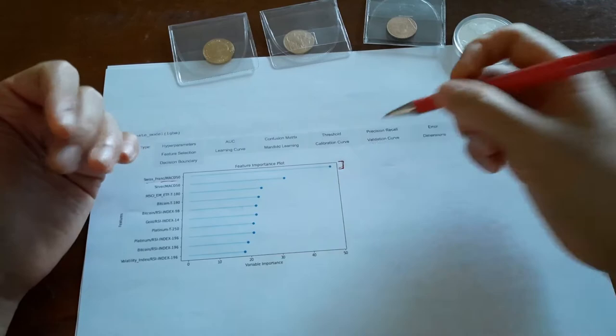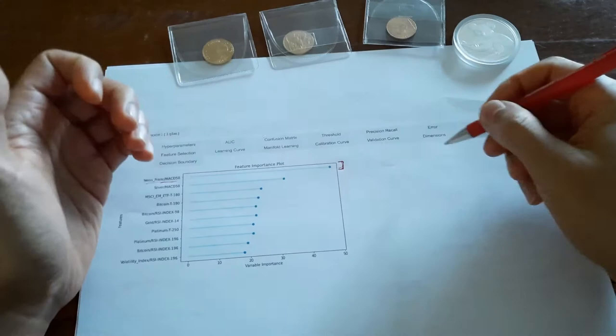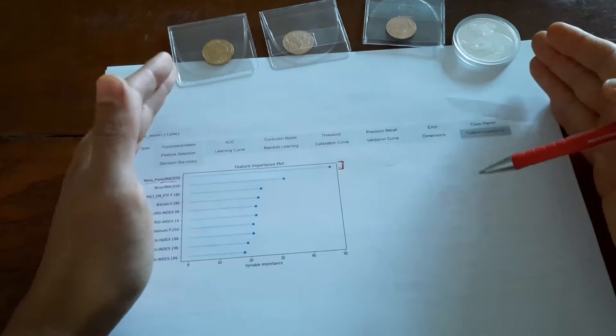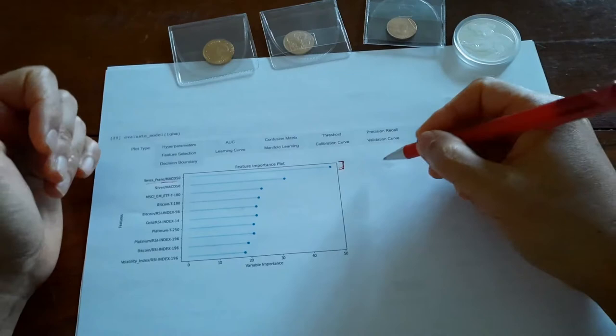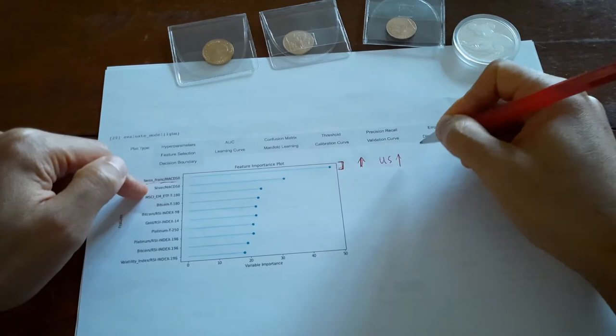So this is Swiss francs. It is the US dollars measured by Swiss franc, how many Swiss francs is $1 worth. It's USD divided by Swiss franc. When this number goes up, the dollar is going up and the Swiss franc is weakening. When this thing is going down, the US dollar is weakening, the Swiss franc is going up.